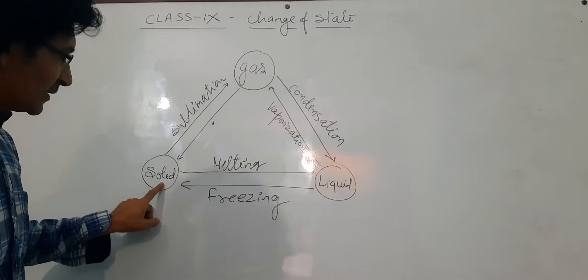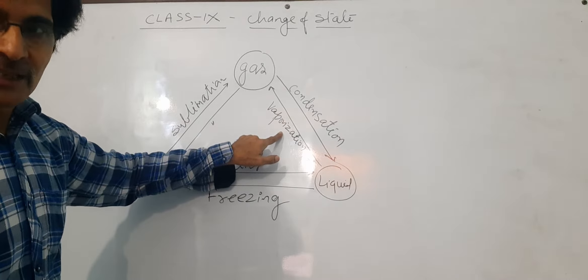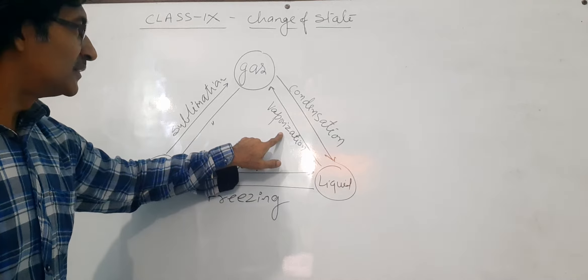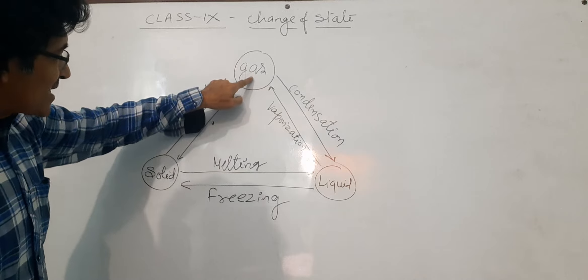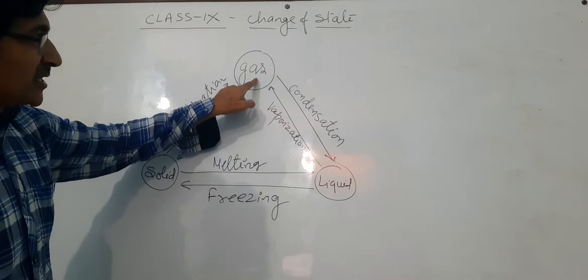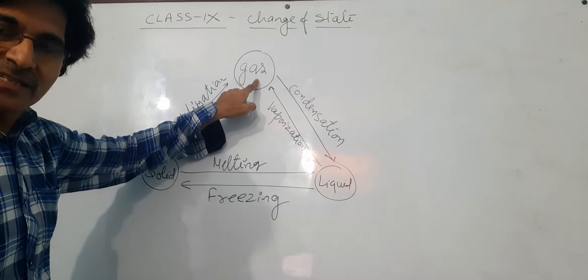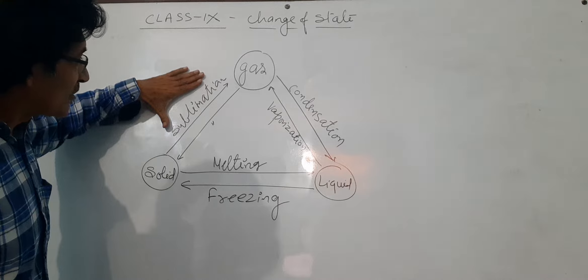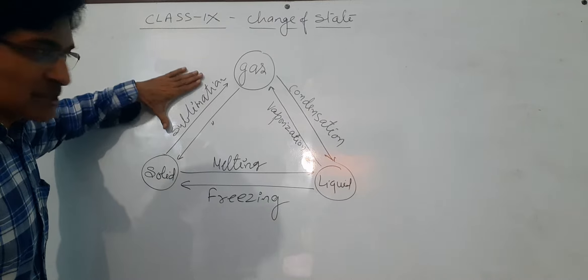Matter changes its state — solid into liquid, liquid into gas, and gas into solid again. These three states can change vice versa. Look at the board. I made a triangle in which I kept gas, then solid, then liquid. When gas changes to liquid, that is known as condensation.